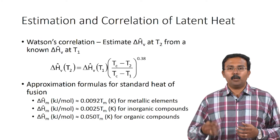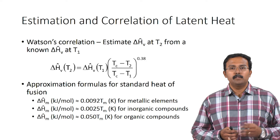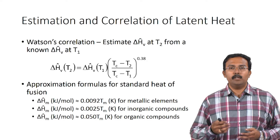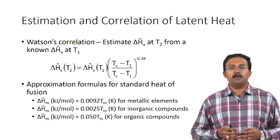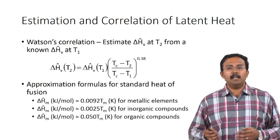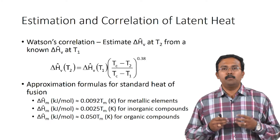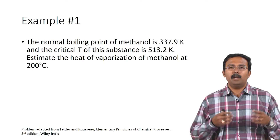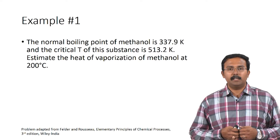There are also approximate formulas for estimating the standard heat of fusion. The standard heat of fusion for metallic elements is 0.0092 times the melting point, for inorganic compounds it is 0.0025 times the melting point, and for organic compounds it is 0.050 times the melting point. All melting points are in Kelvin. Here are a couple of example problems where we will apply these equations to calculate the heat of vaporization or the heat of melting.